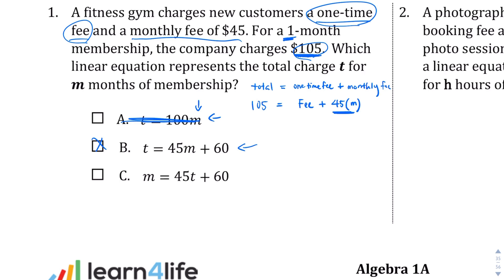And if we take a look at choice C, they do use a variable T here. But T really should be the total, where M is the number of months. You could make the argument that C could work as well, but B is probably just a better choice because the variables just make a little bit more sense in that situation. So B is your correct choice.